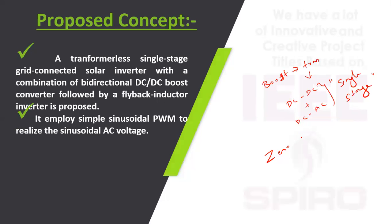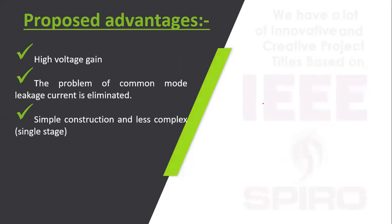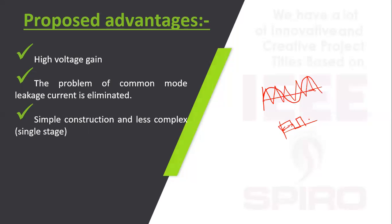The proposed converter also maintains zero leakage current. The controller used is sinusoidal PWM, where a sine wave is taken as the carrier wave and a triangular wave as the reference. Comparing these generates asymmetrical pulses where only the time period varies, producing symmetrical pulse patterns. Sinusoidal PWM is used because the inverter output is a sine wave.